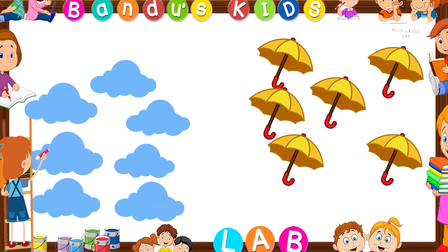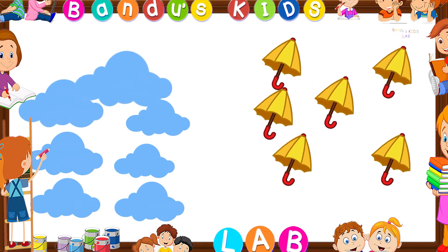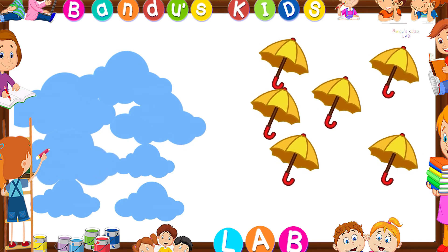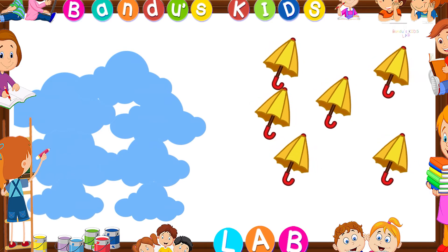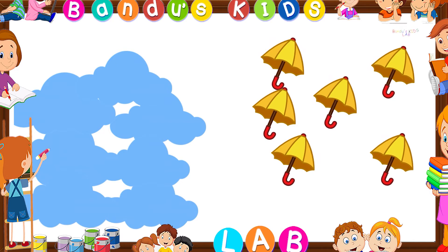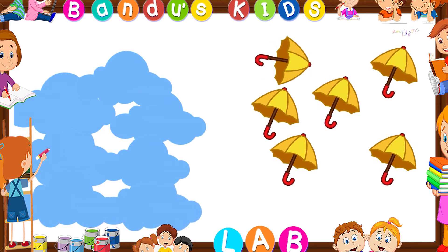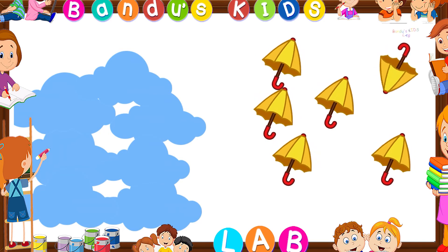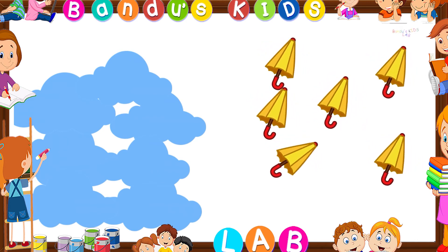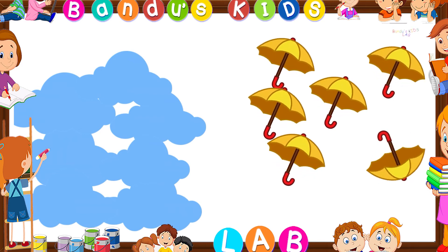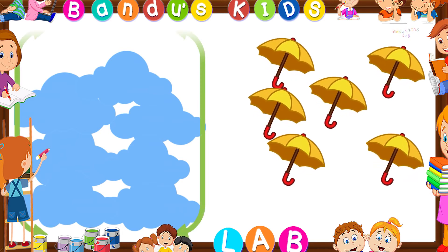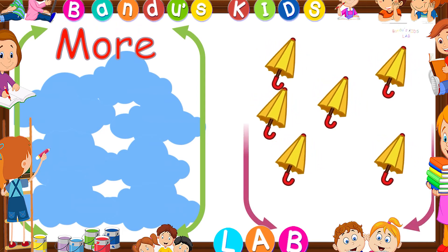Let's count the clouds first: one, two, three, four, five, six, seven — here are seven clouds. Now let's count the umbrellas: one, two, three, four, five, six — here are six umbrellas. Can you say which one is the more one here? You're right! It is the set of clouds. The set of umbrellas is the less one.